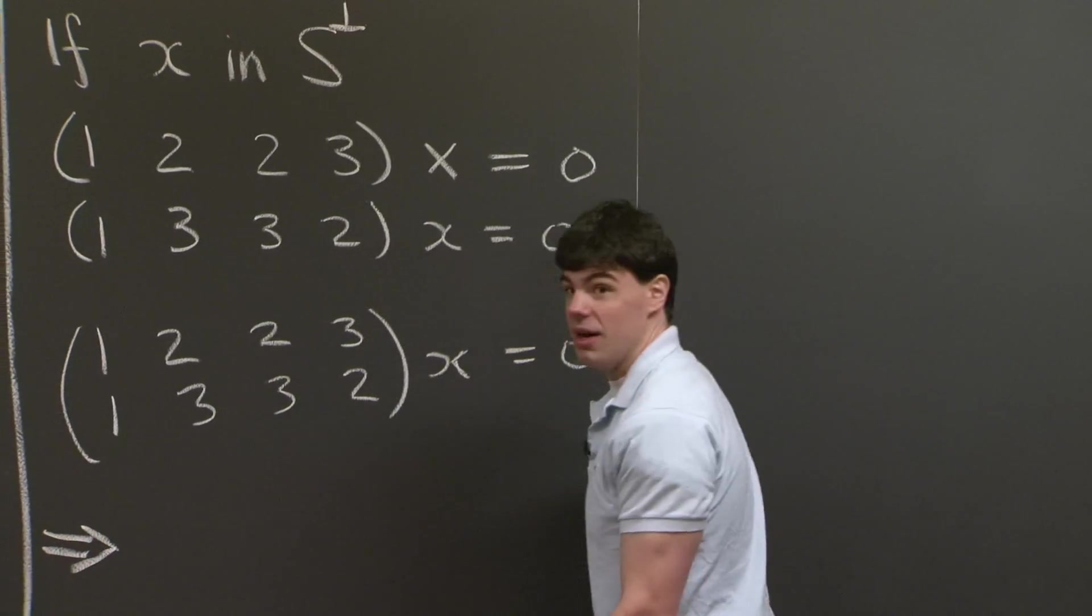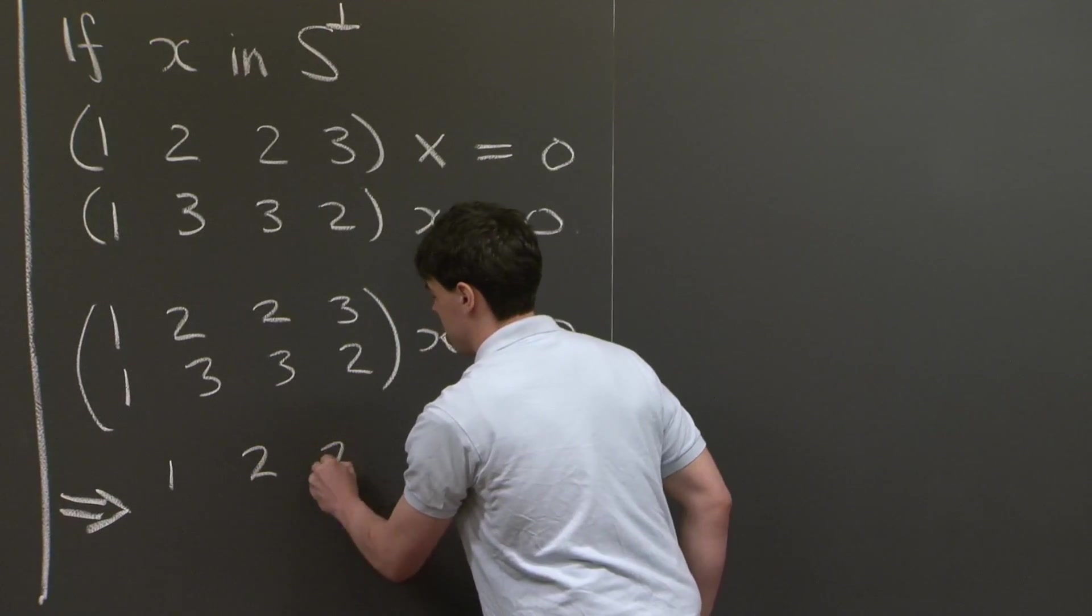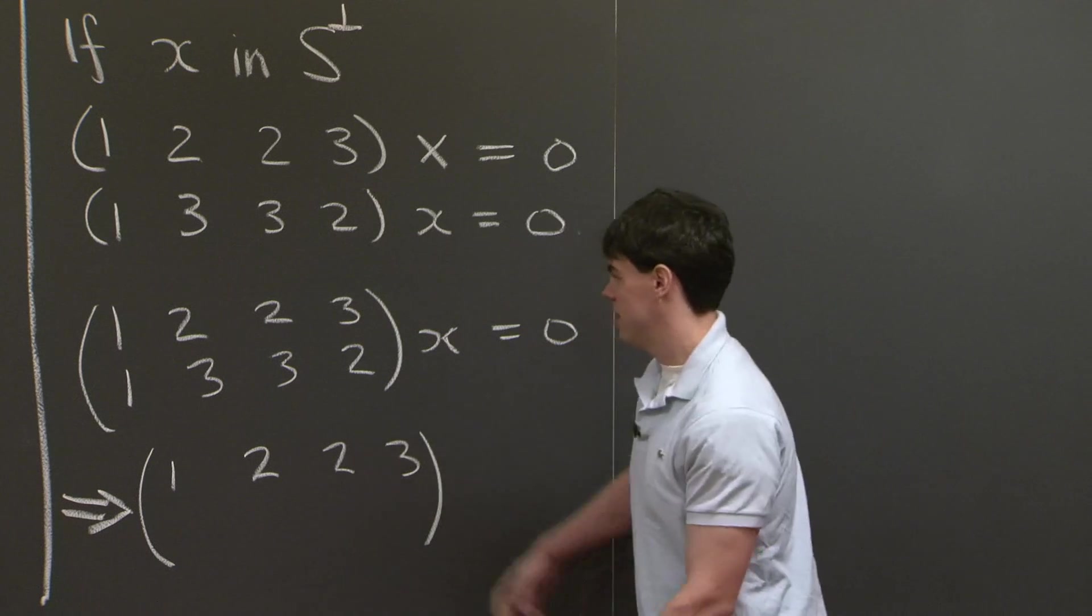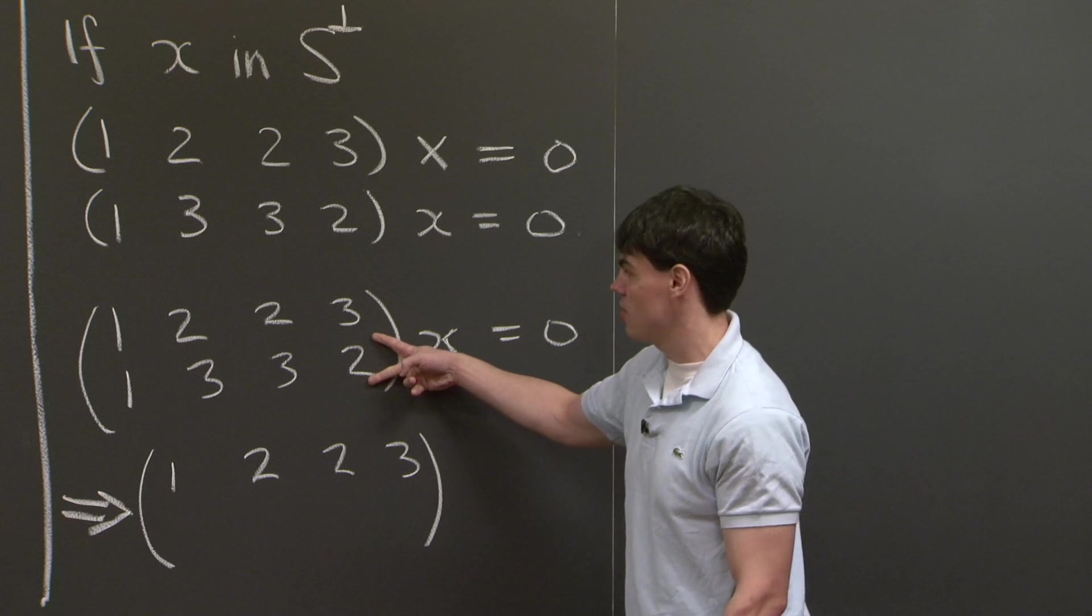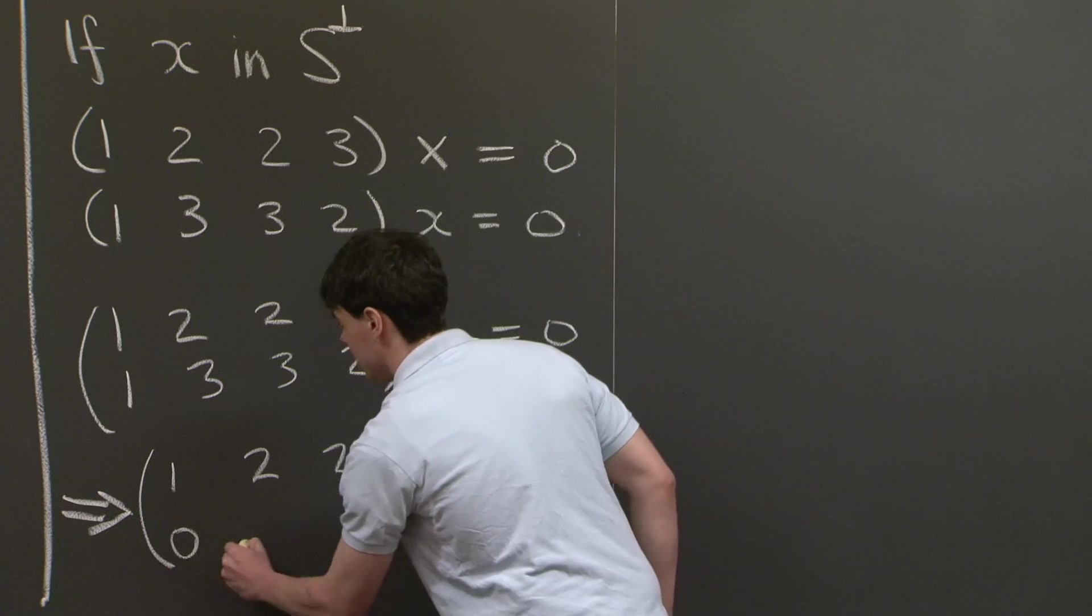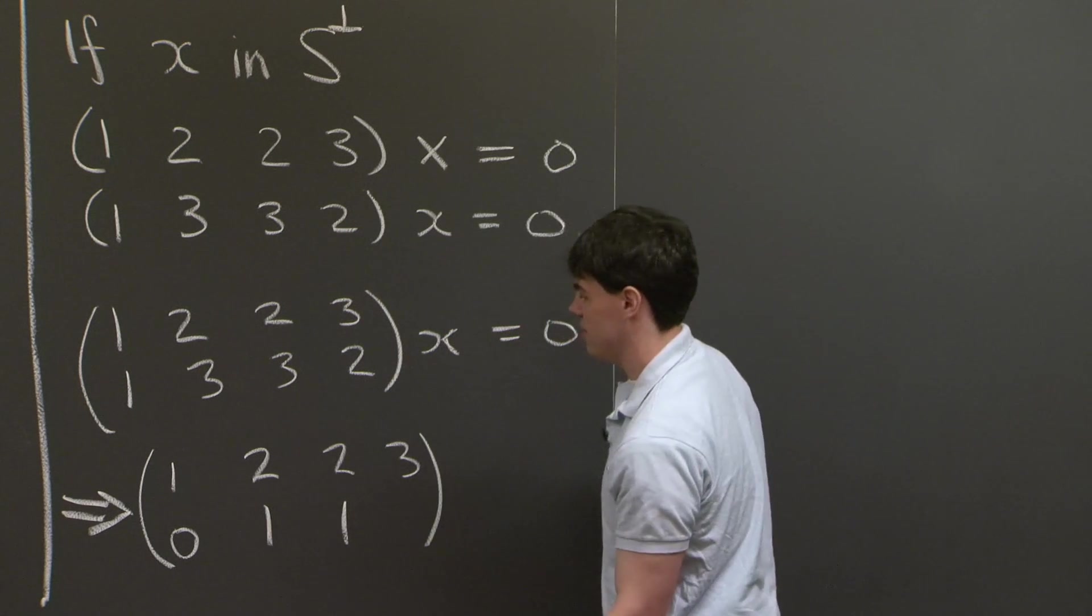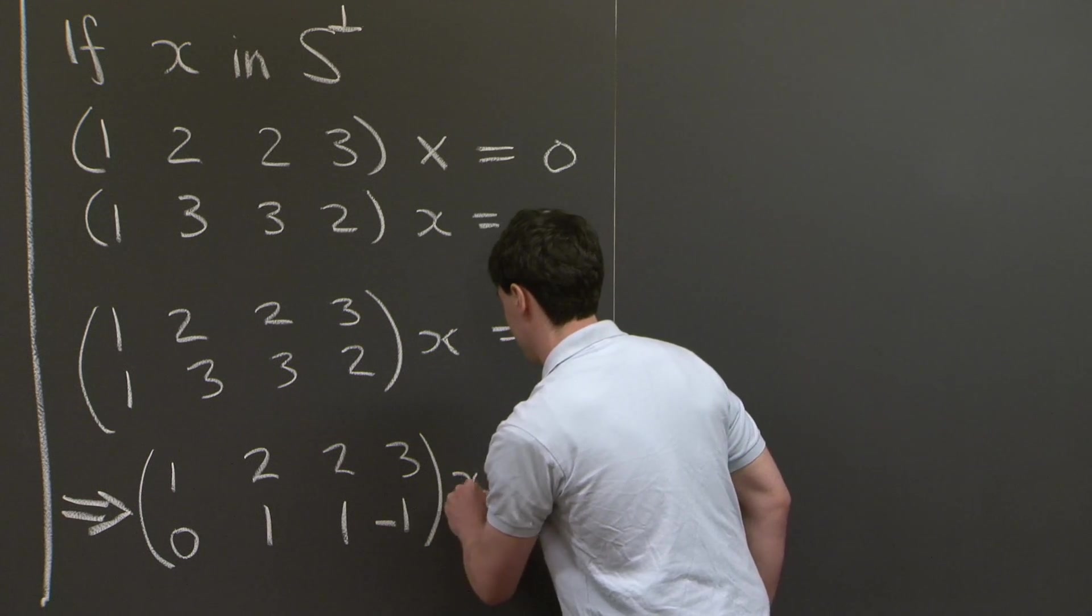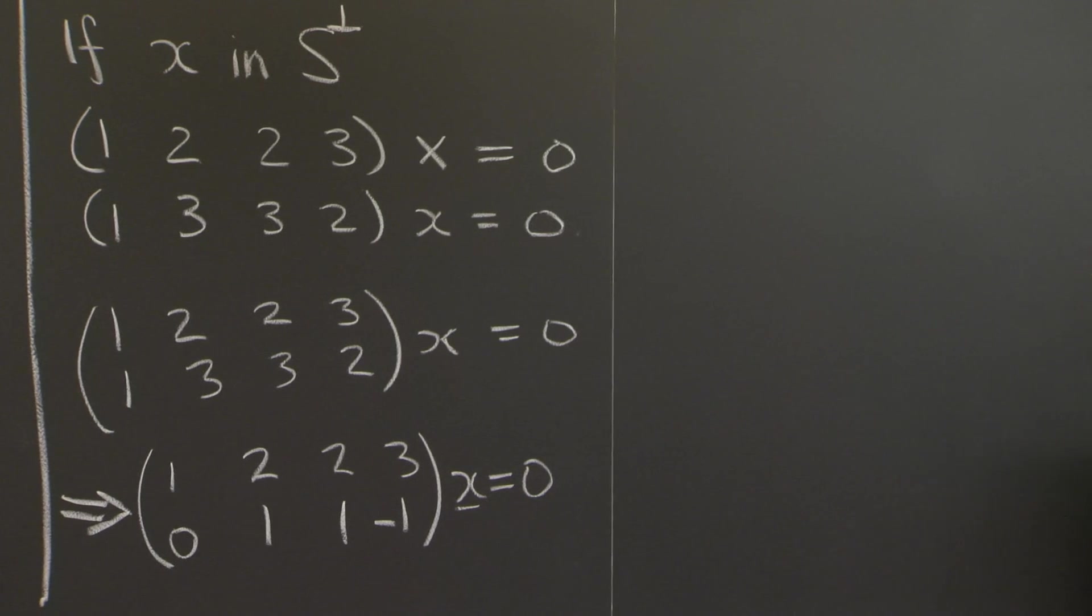So I'm going to just row reduce this matrix. And notice that by row reduction, we don't actually change the null space of a matrix. So if I'm only interested in the null space, this system is going to be equivalent to, I can keep the top row the same, and then just to simplify our lives, we can take the second row and subtract one copy of the first row. Now, if I do that, I obtain (0, 1, 1, -1).